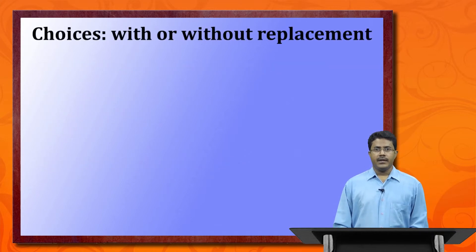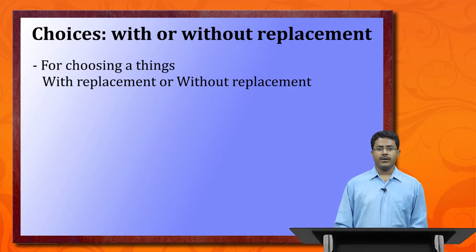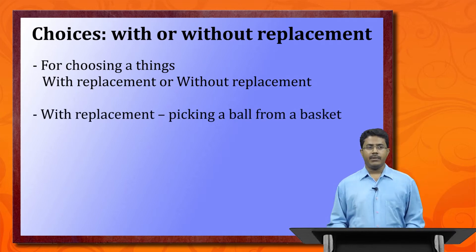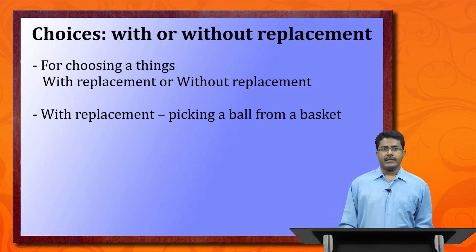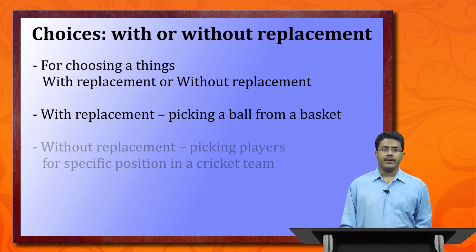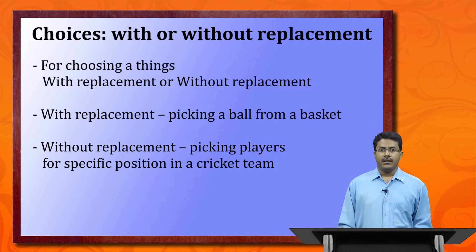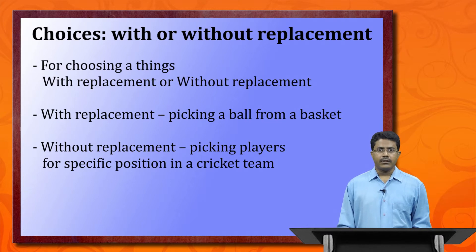To calculate probability we must consider all possible outcomes, and for that we need to decide whether we are choosing with or without replacement. With replacement: picking a ball from a basket, noting it, and dropping it back — so it can be picked again. Without replacement: picking players for specific positions in a cricket team — once a wicket-keeper is chosen, the same person cannot be chosen again.